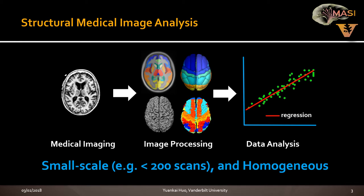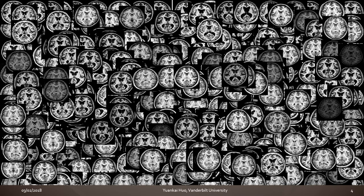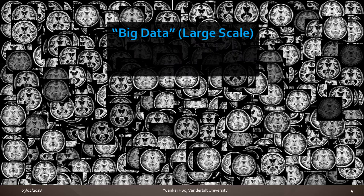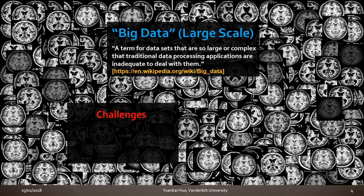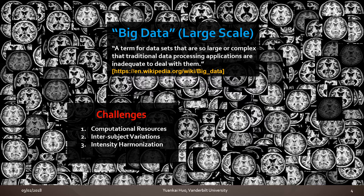There is an issue: traditionally, people investigate medical images at small scale — cohorts typically less than 200 scans, collected from one scanner, meaning images are very homogeneous. Now we are in the era of big data. The data is so large that our traditional image processing methods are not able to deal with big data sets. New challenges include needing strong computational resources, handling big inter-site variations, intensity harmonization, and robustness.